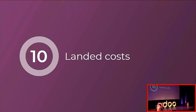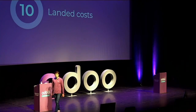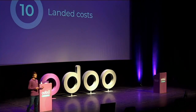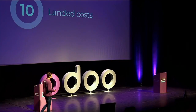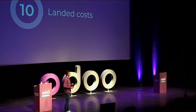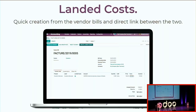Finally, the landed cost functionality remains the same, but there is an extra possibility to automatically create a landed cost from the invoice itself. In the past, you had to first record the vendor bill for additional services and then separately create a landed cost. Now, if the vendor bill contains a landed cost product, you can create a landed cost directly from that vendor bill.